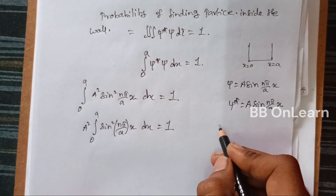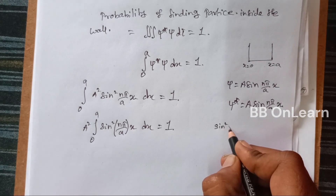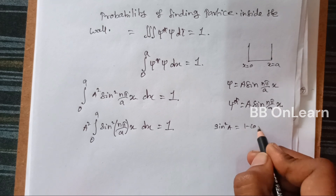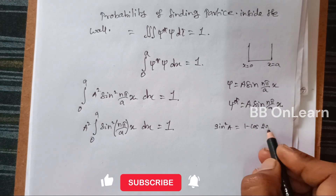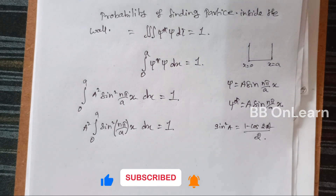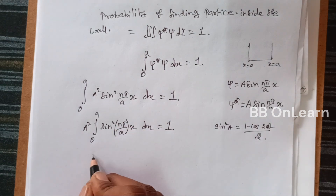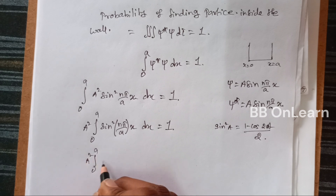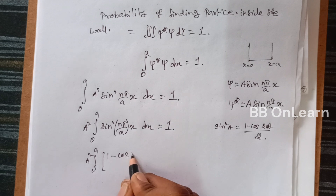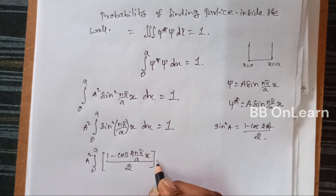We know the trigonometric formula: sin squared a equals (1 minus cos 2a) divided by 2. Now applying this substitution, we get A squared times the integral from 0 to a of the bracket (1 minus cos(2nπ/a · x)) divided by 2.